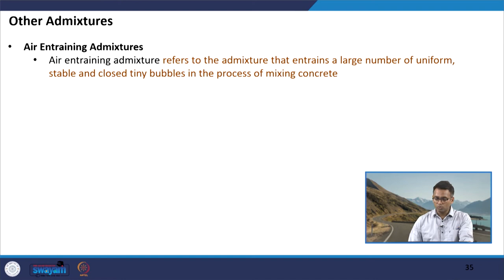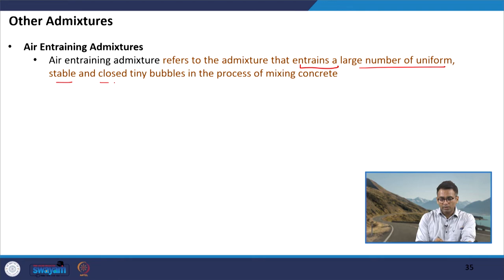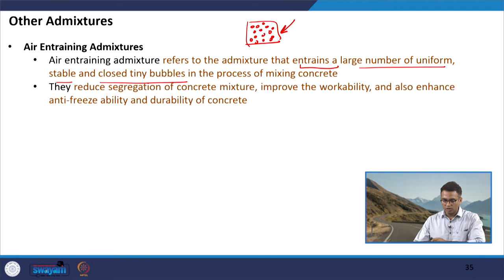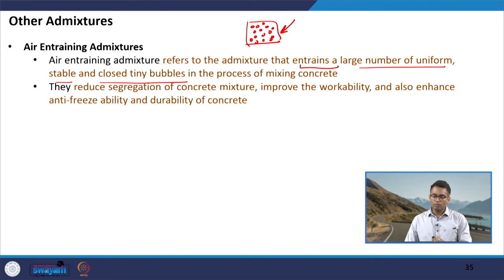We also have air entraining admixtures — very special admixtures required for specific construction purposes. Air entraining admixtures entrain a large number of uniform, stable, closely-spaced, tiny closed bubbles in the concrete, creating small air spaces. Their main purpose is to produce concrete that will be used at locations where freezing and thawing cycles are anticipated.